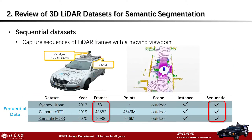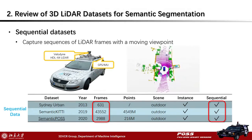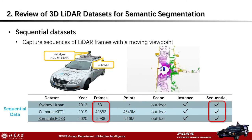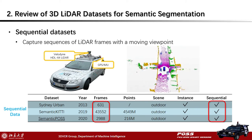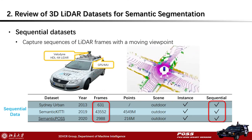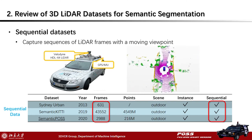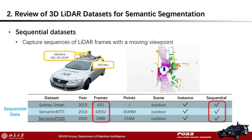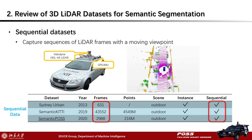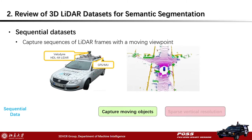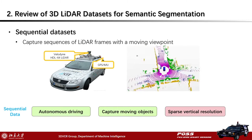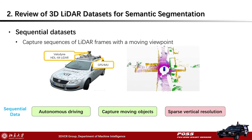Sequential datasets are collected as abundant sequences of frames from vehicle platforms like ADAS, and are most commonly used for autonomous driving tasks such as segmentation of traffic scenes, vehicle and pedestrian detection, and tracking. Sequential datasets capture sequences of LiDAR frames with moving viewpoints on the street, and usually contain more frames but sparser points than static datasets.